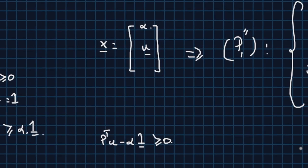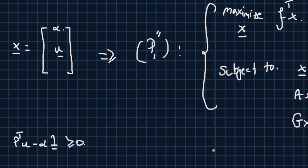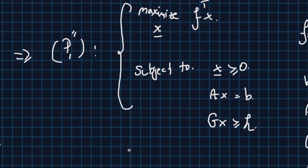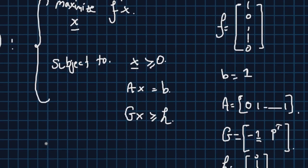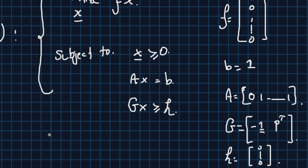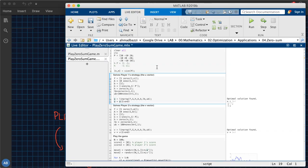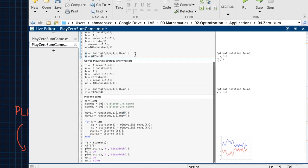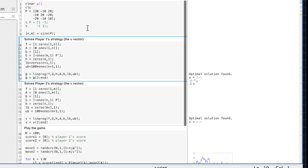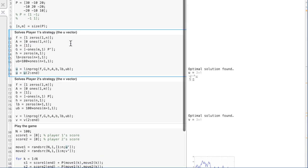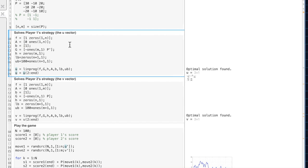We're going to see that player one is solving a certain optimization problem whereas player two is solving not only another optimization problem but the dual of player one's optimization problem. We're going to see how MATLAB could be used to solve the problem so it will return the optimal strategies for player one and player two.